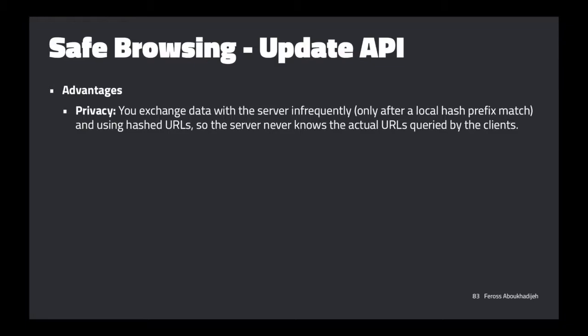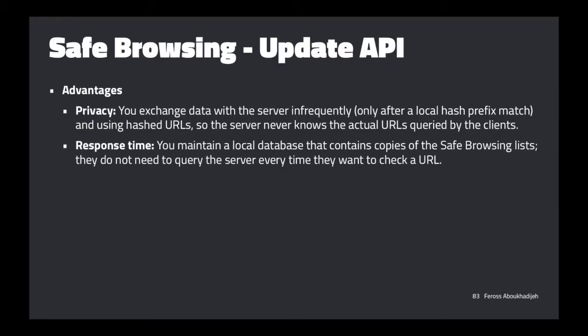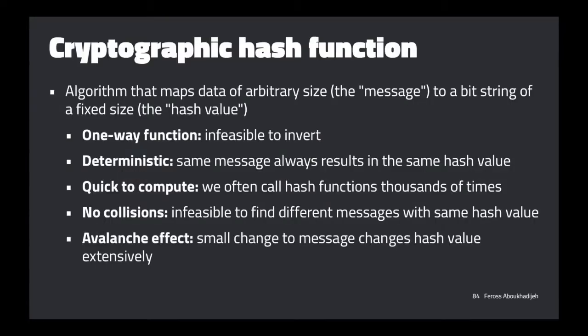To check if a URL is safe, we hash it ourselves in exactly the same way Google did, chop off the beginning to take the prefix, and look to see if it's in the list. If it's in the list, it means the URL may be unsafe — but it may not be. Let me walk through what it actually looks like.